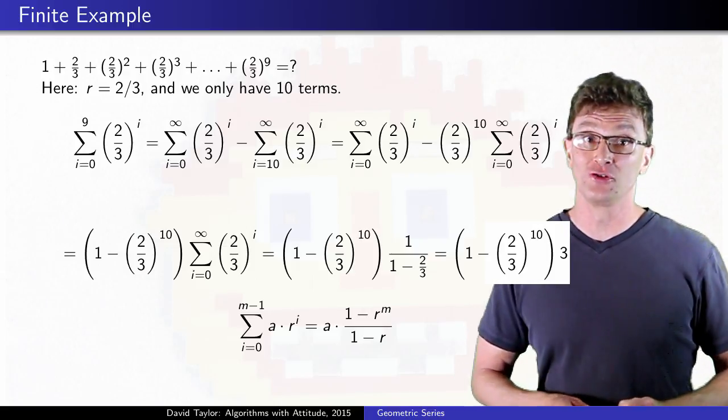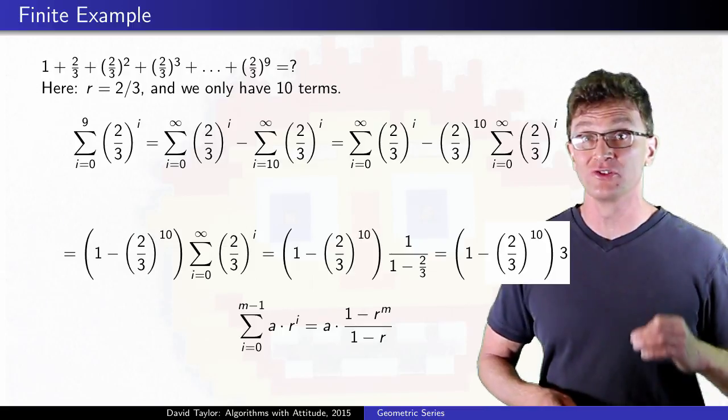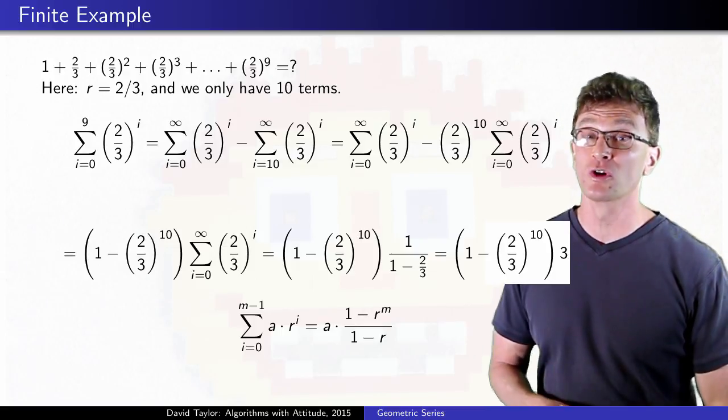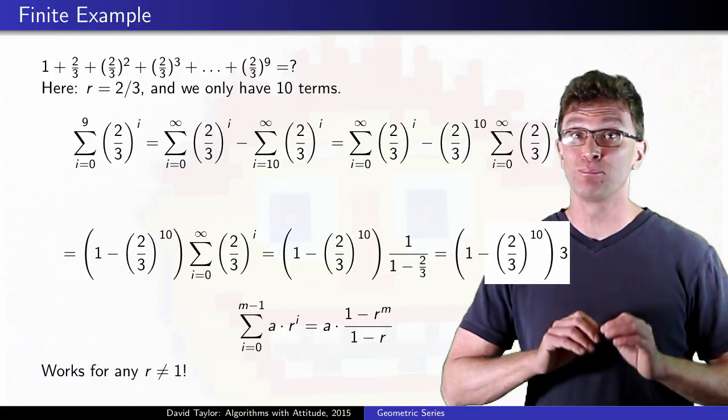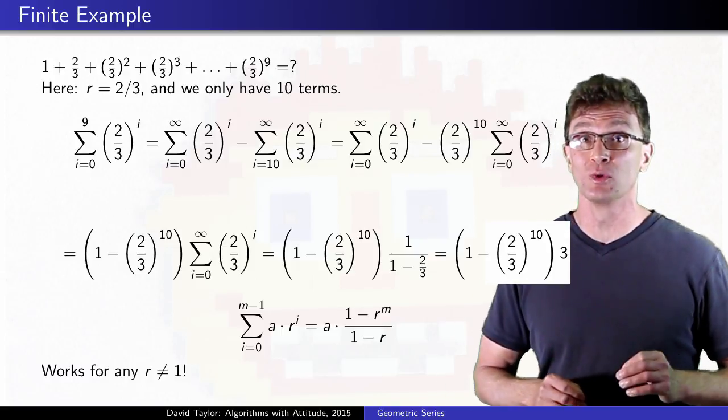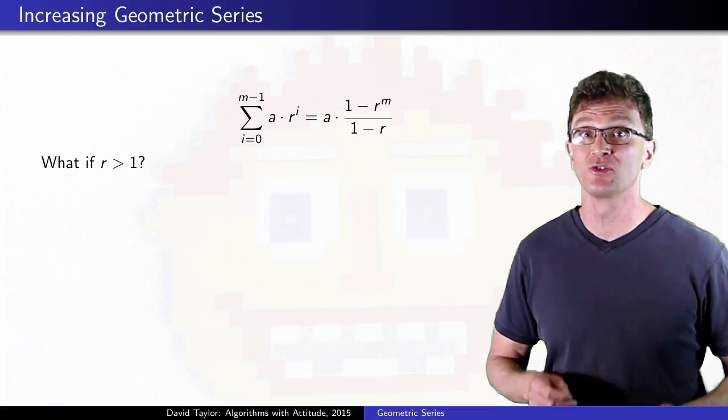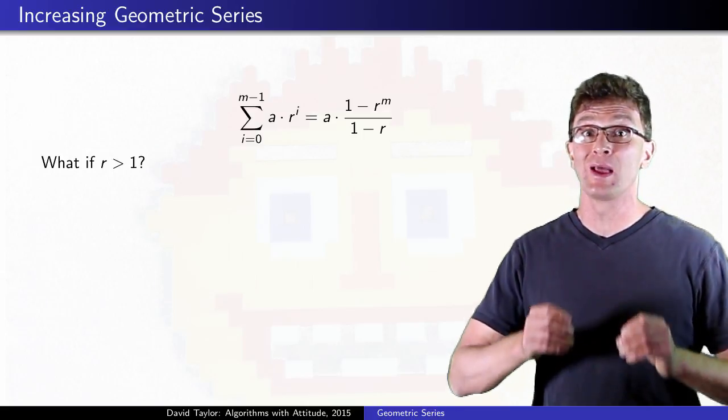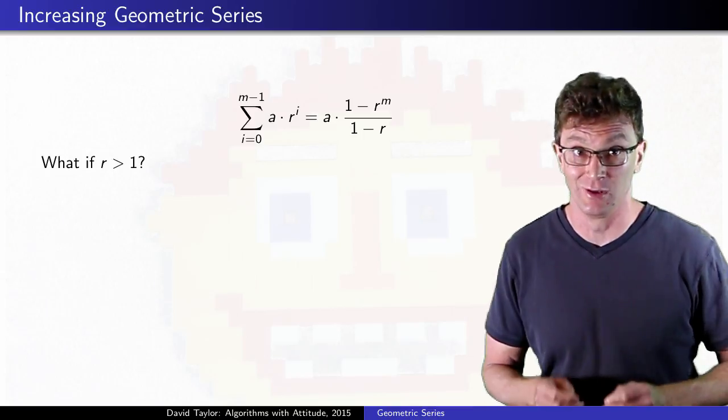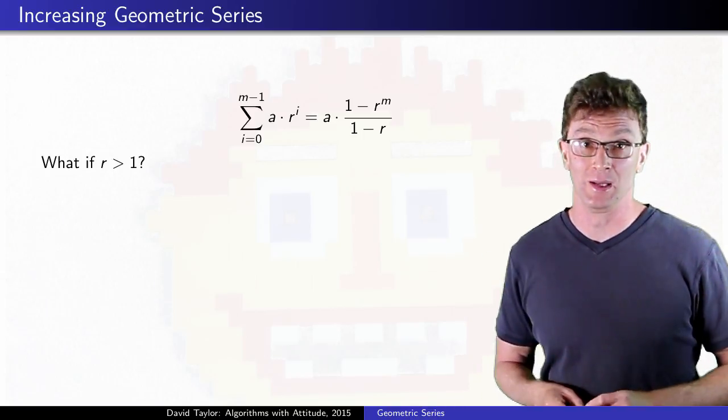My proof here so far assumes that the absolute value of r is less than 1, but this one works for any r not equal to 1. Why? Well to me, it doesn't seem particularly intuitive that the formula would hold for increasing sequences, as well as decreasing ones, but then again my intuition told me to spend all day making this Freaktastic video, instead of just referencing the Wikipedia page.